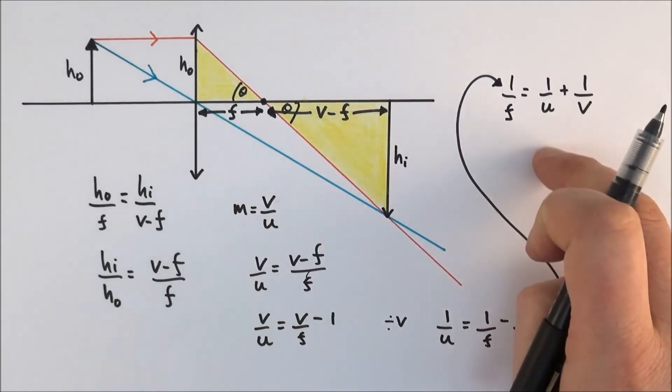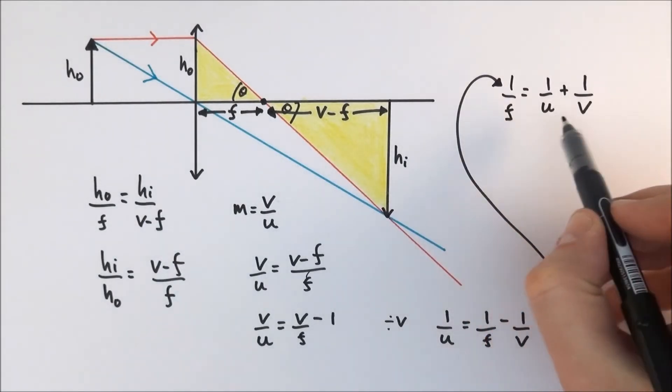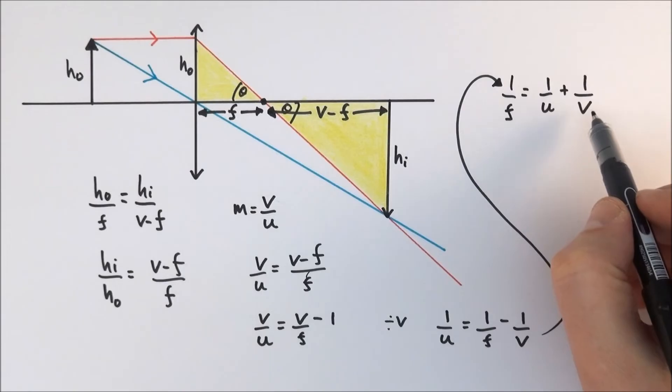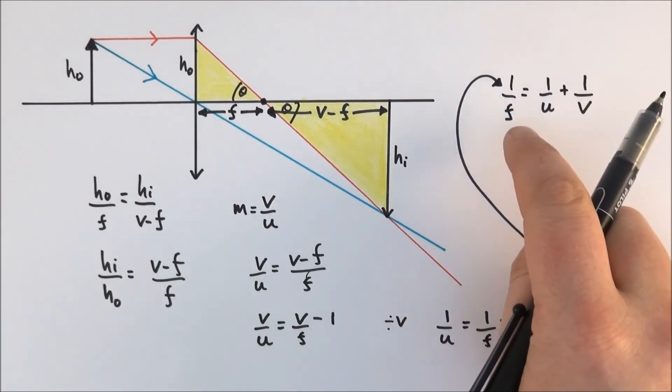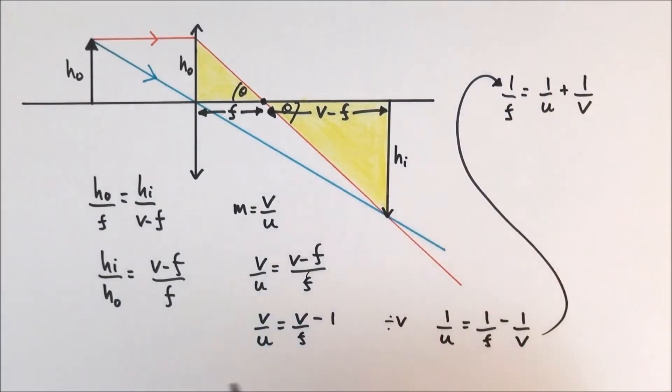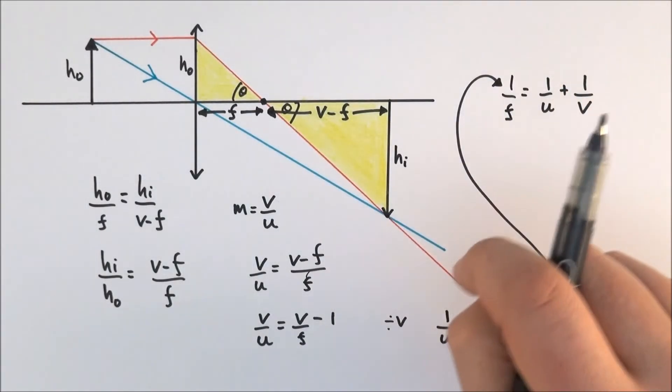This thing here is the lens equation and what it means is that if you know maybe the focal length and also the distance to the object you could then work out the distance to the image. So provided you know either f, u or v, provided you know two of those things you can work out the third and just remember if this is what you're trying to find out you've always got to take the reciprocal of it.